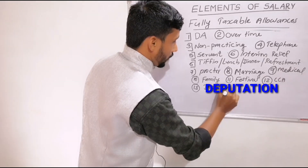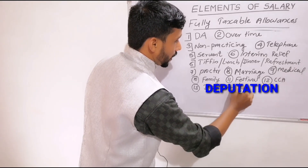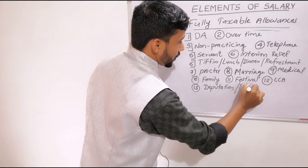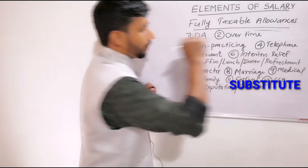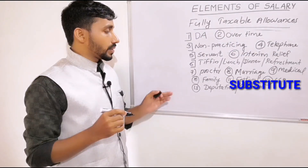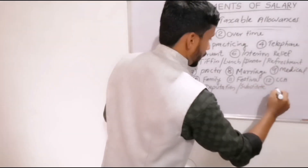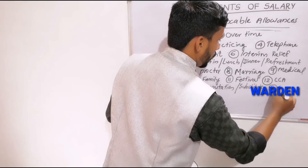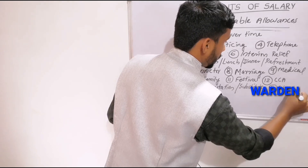The thirteenth is Deputation Allowance. The fourteenth is Substitute Allowance. All of these are fully taxable allowances. The next one is Warden Allowance, which is also fully taxable.